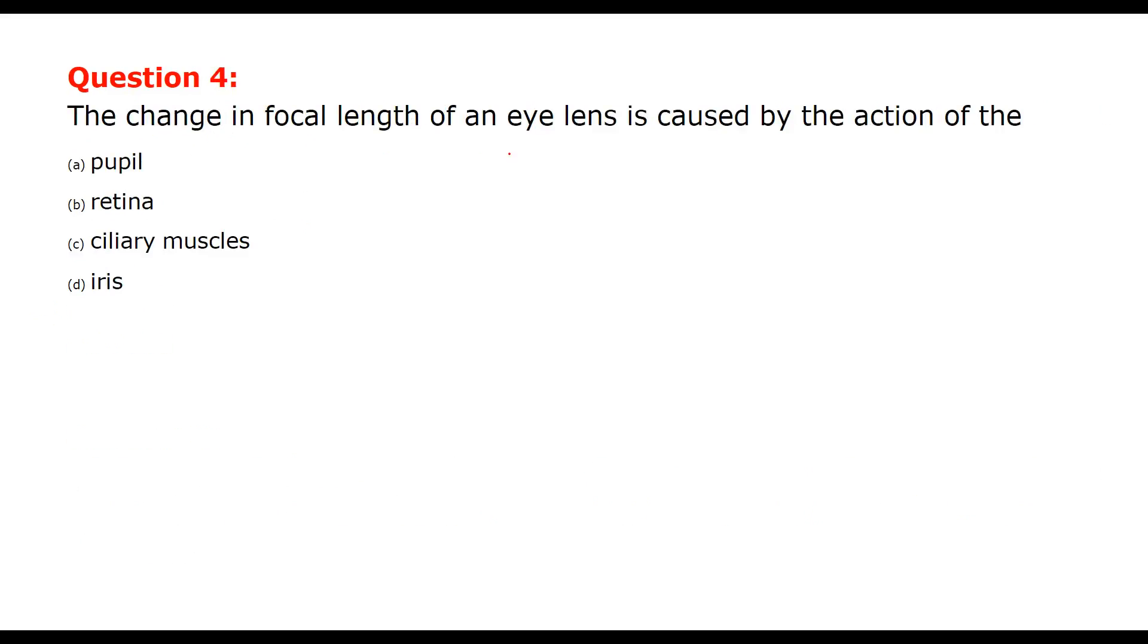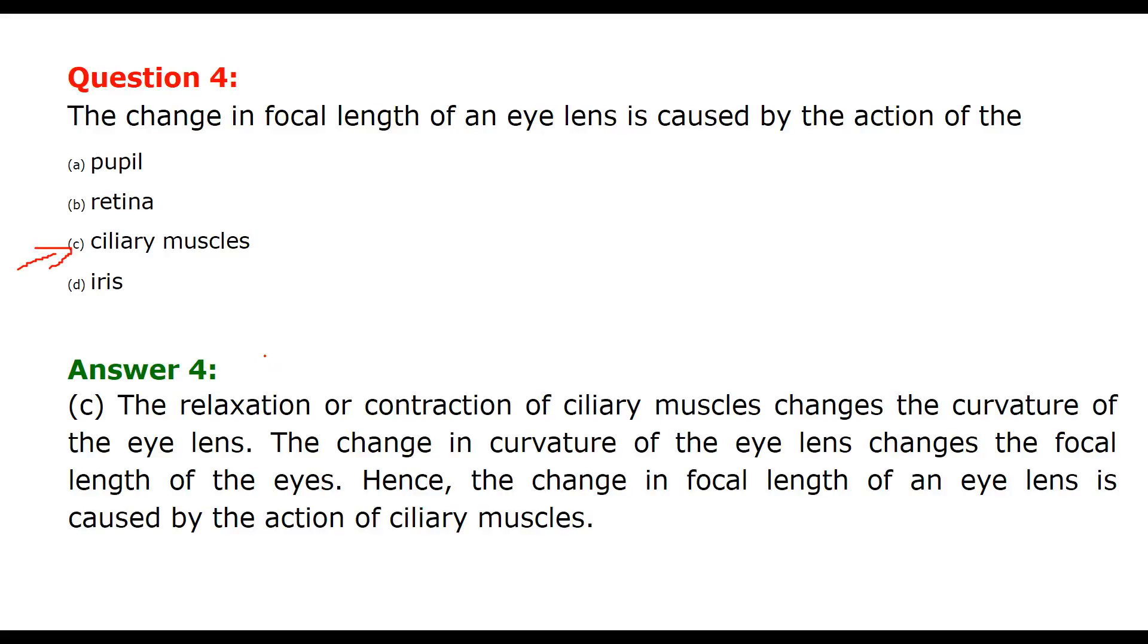The change in focal length of an eye lens is caused by the action of - which part of our body? Muscles, basically ciliary muscles. The relaxation and contraction of the ciliary muscles change the curvature of the eye lens, and the change in curvature of eye lens changes the focal length of the eyes. That is why the change in focal length of an eye is caused by the action of ciliary muscles.